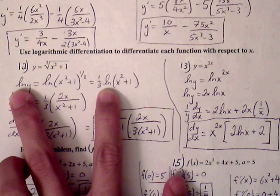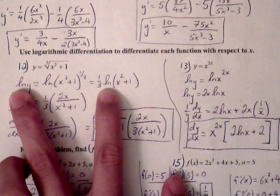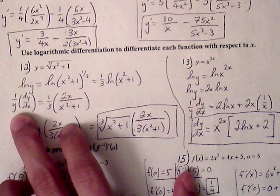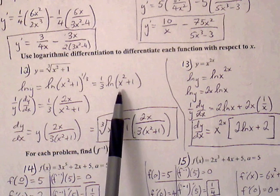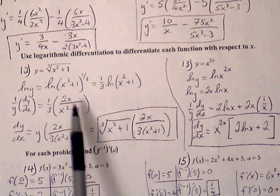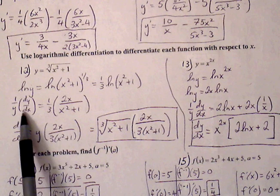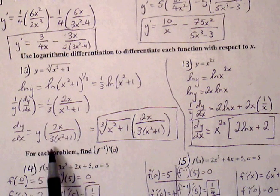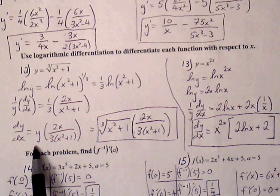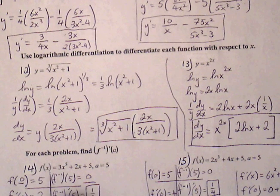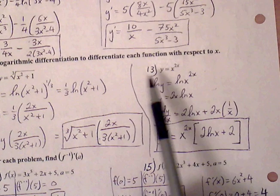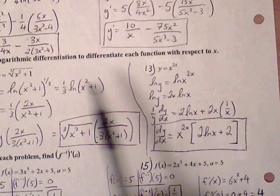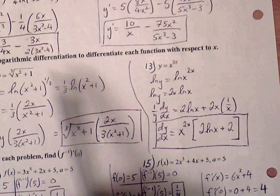Now we're ready to find the derivative. For ln y, we go through implicit differentiation: ln y becomes (1/y)(dy/dx). For the right side, use the rule ln(u) becomes u' over u. Then solve for dy/dx by moving the y to the right side, and replace y with the original equation in terms of x.